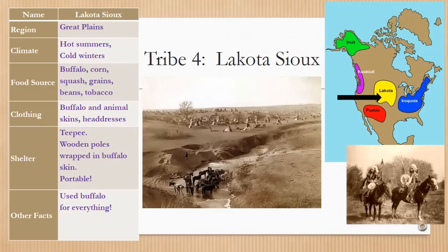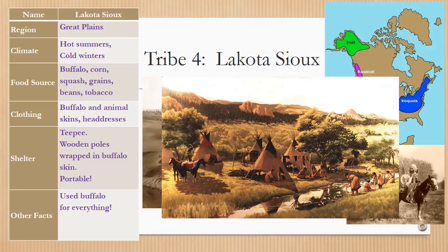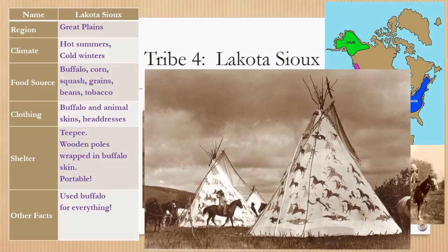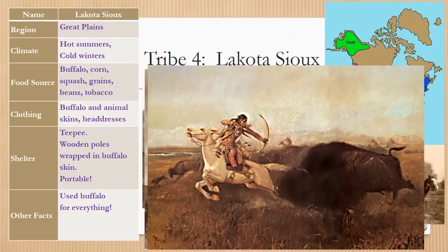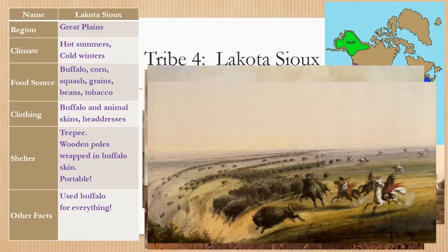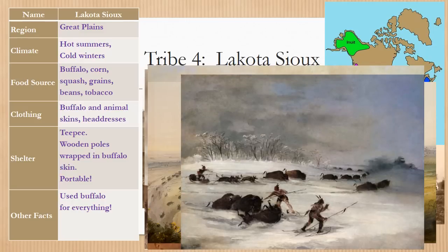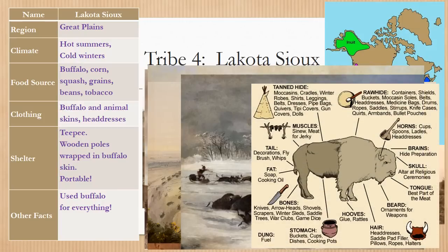Tribe four: the Lakota Sioux. The region they would have lived in is the Great Plains. The climate had hot summers and cold winters. Their food sources were buffalo, corn, squash, grains, beans, and tobacco. Clothing included clothes from buffalo and animal skins, and the Lakota Sioux are famous for their headdresses. Their shelters were teepees with wooden poles wrapped in buffalo skin — portable and easy to transport from place to place. Other facts: they used the buffalo for almost everything. You can see a warrior hunting a buffalo, their main food source, and sometimes they would run buffalo over cliffs. Here you can see the multiple ways they used the buffalo.